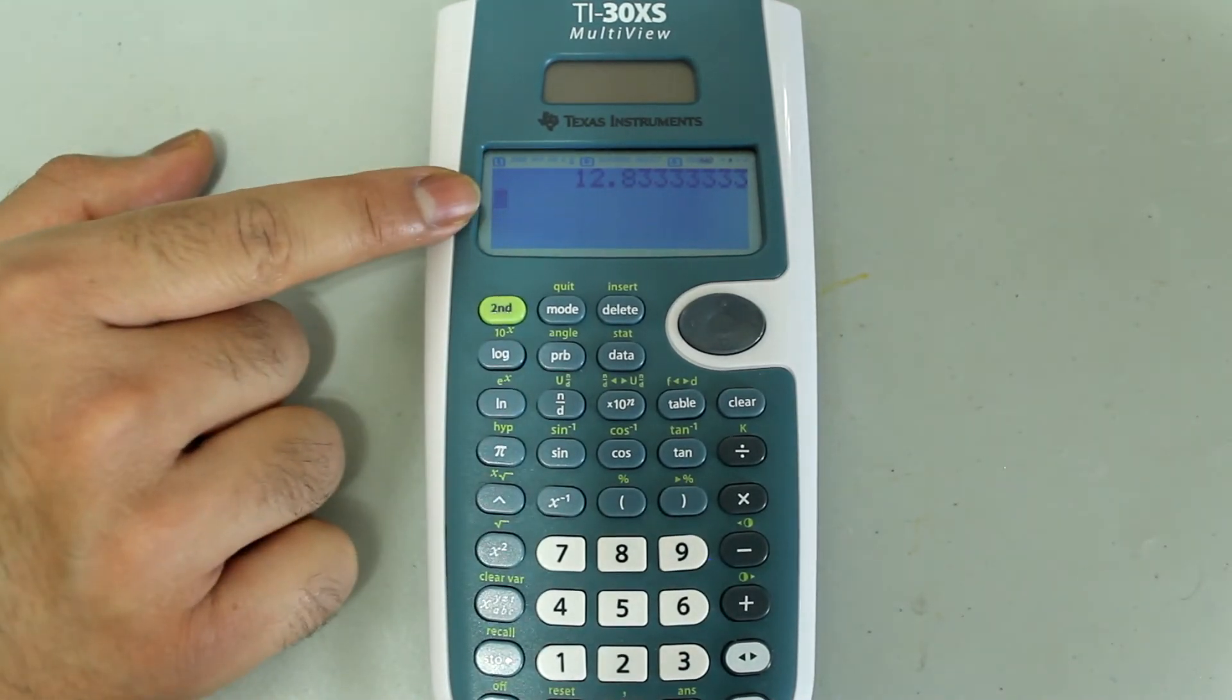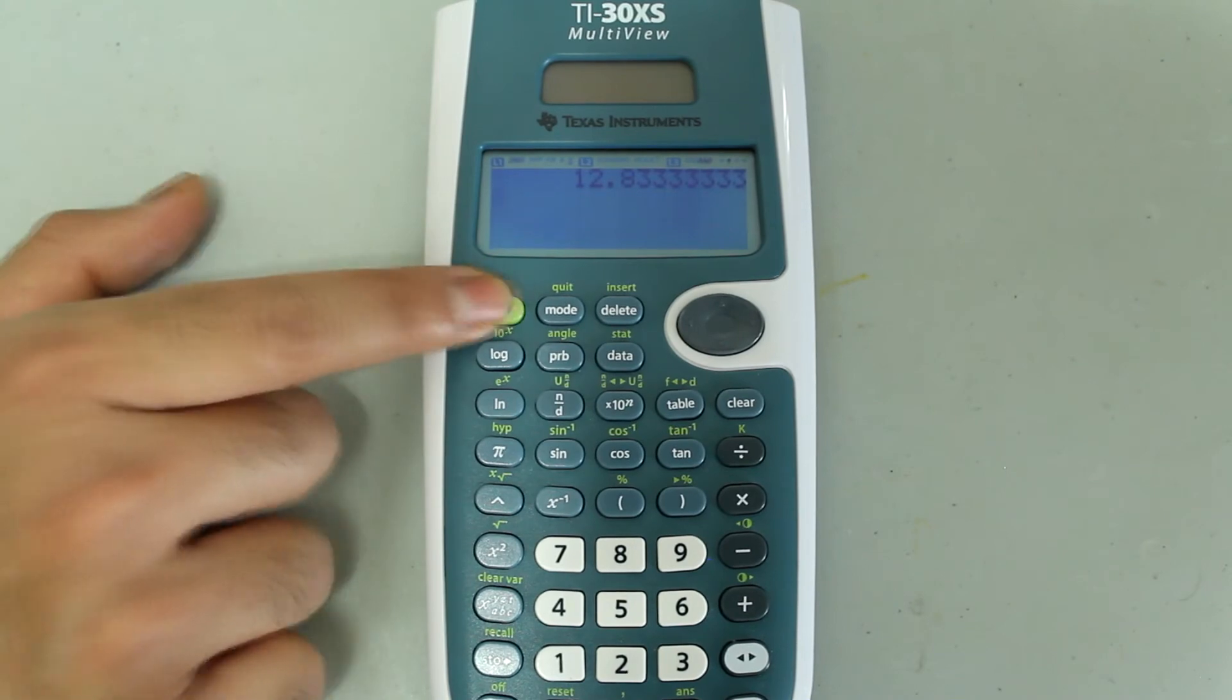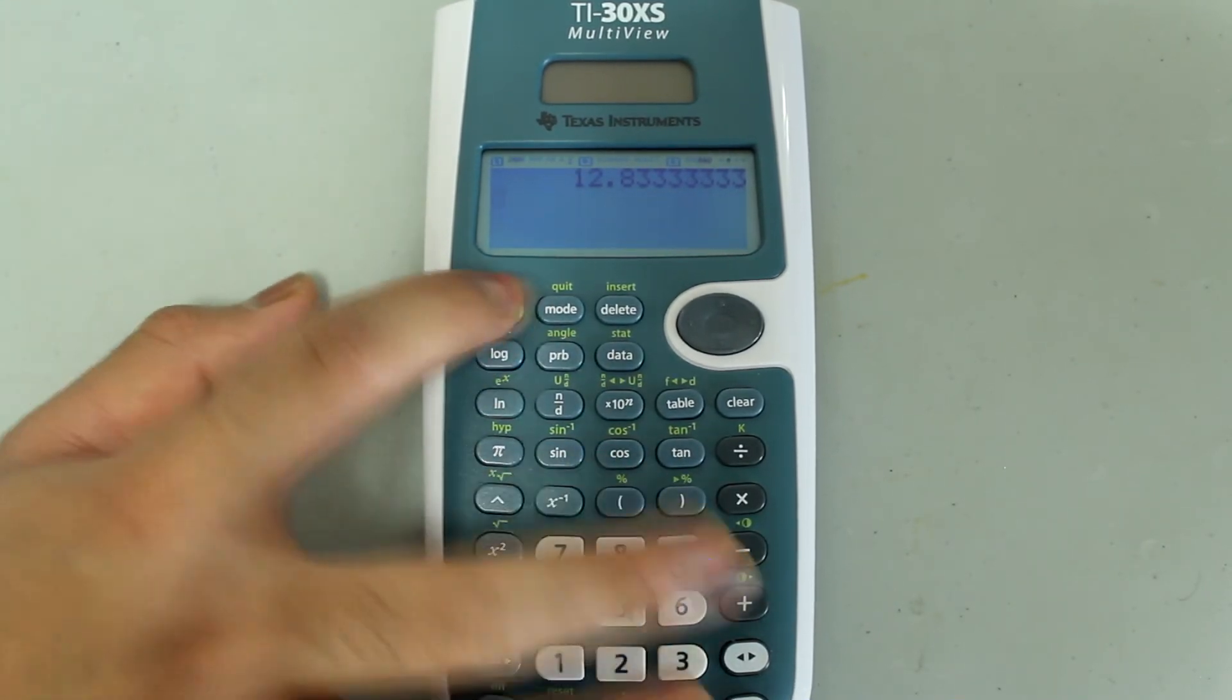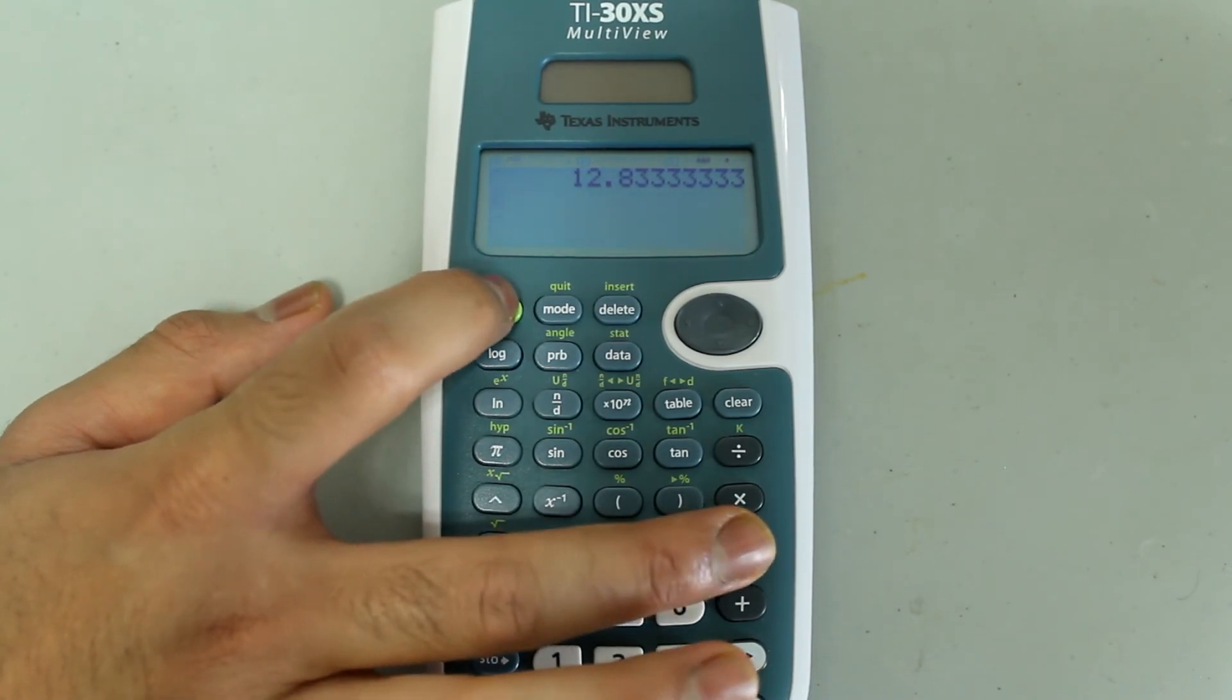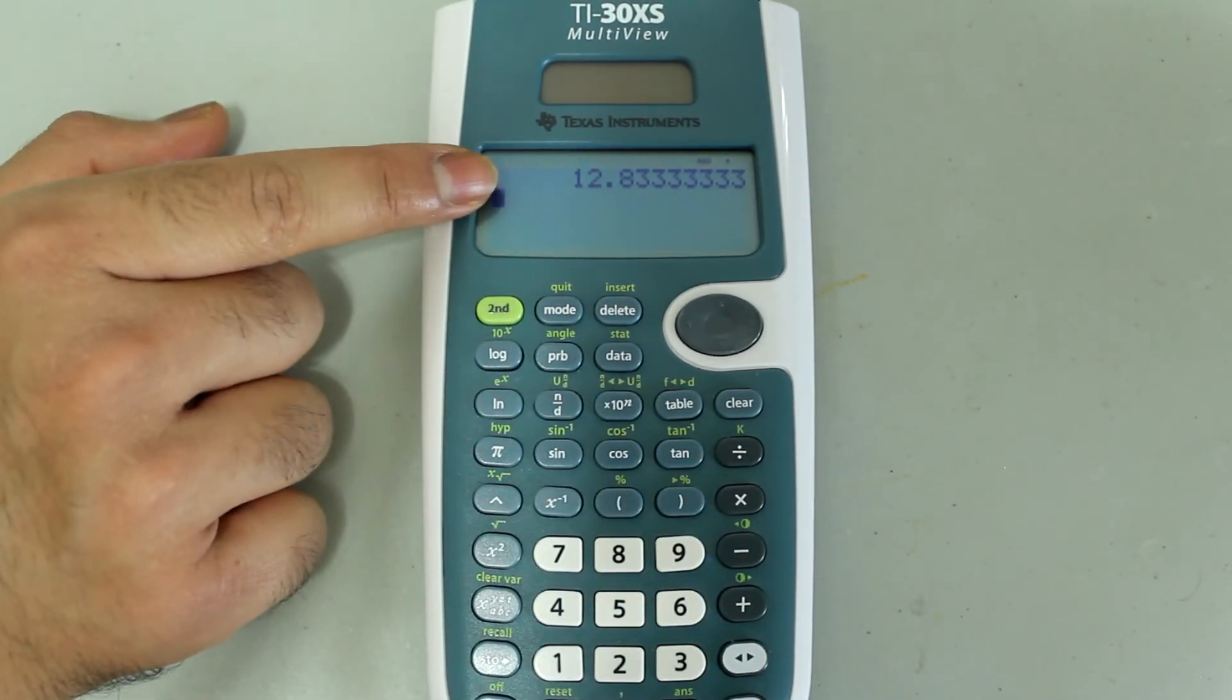And you can see the screen has gotten significantly darker. If you want to lighten your screen, press second and the minus sign, second, minus, second, minus, second, minus. And you see that the screen has gotten lighter again.